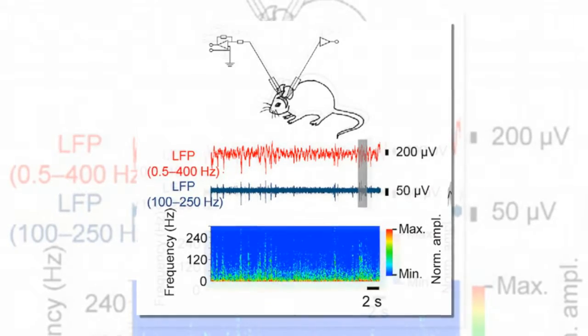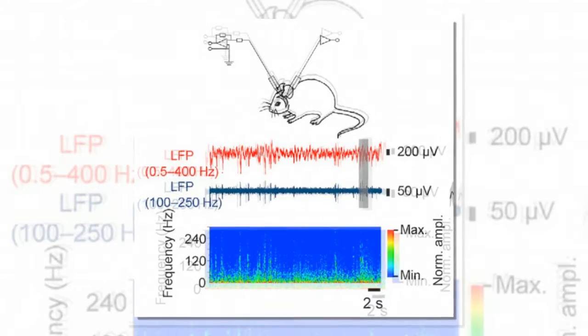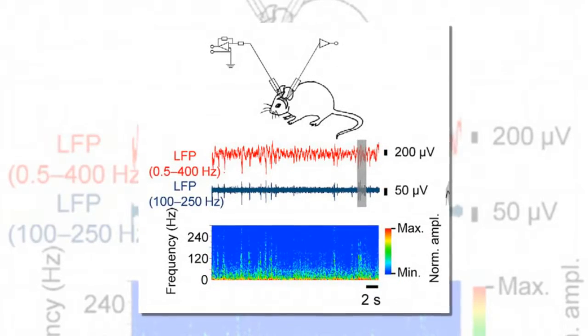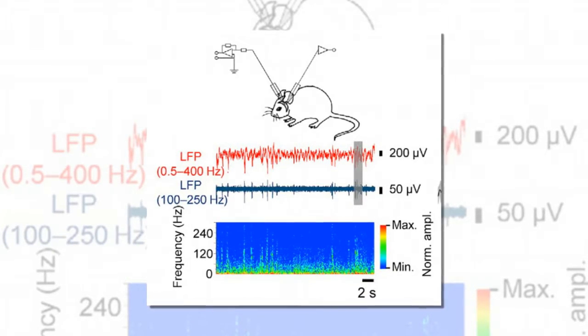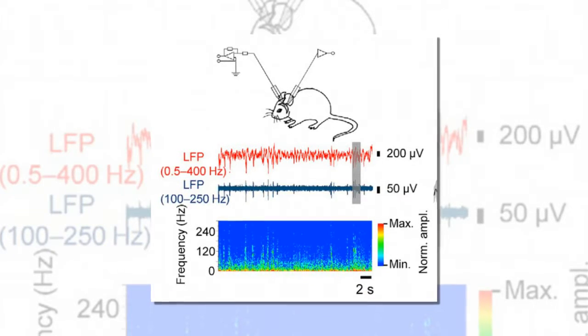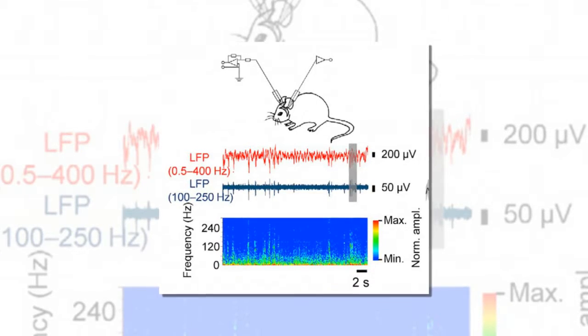Our results shed light on the mechanisms underlying this high frequency network oscillation, explains Jonas. As our experiments provide information both about the phase and the location of the underlying conductance, we were able to show that precisely timed synaptic inhibition is the current generator for sharp wave ripples.